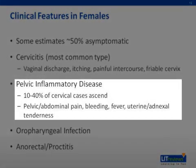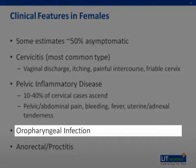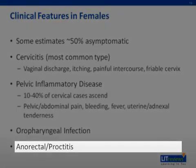In about 10 to 40% of cases of cervicitis, the infection can ascend further into the reproductive tract, causing pelvic inflammatory disease, characterized by pelvic and abdominal pain, potentially vaginal bleeding, and fever. Uterine or adnexal tenderness may be present on exam. Oropharyngeal infections can occur with purulent discharge, erythema, and sore throat. In females who participate in receptive anal sex, anal rectal infection or proctitis can also occur.